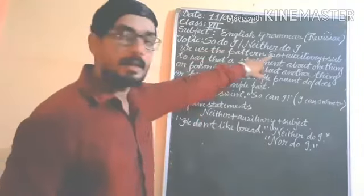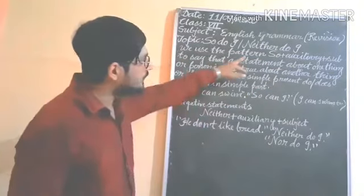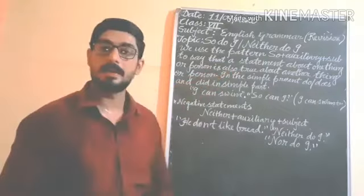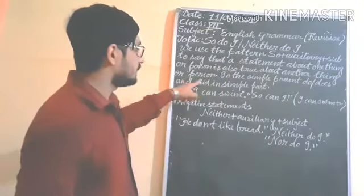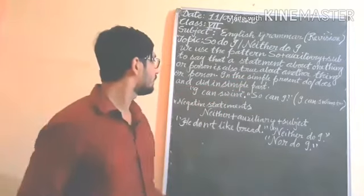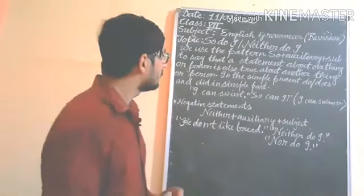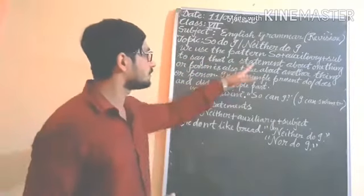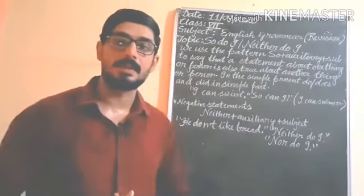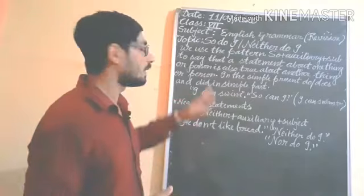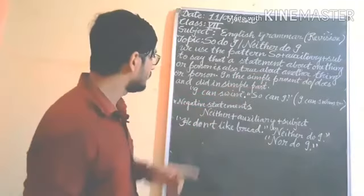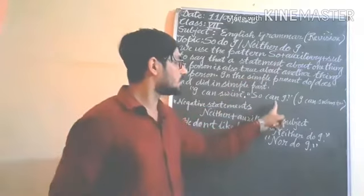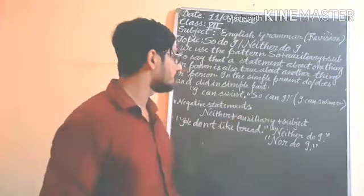Now, 'so do I' and 'neither do I'. We use the pattern 'so plus auxiliary plus subject' to say that a statement about one thing or person is also true about another. In the simple present we use 'do' or 'does', and in the simple past we use 'did'. For example, if the statement is positive — 'I can swim' — we say 'So can I', using 'so plus auxiliary plus subject'.